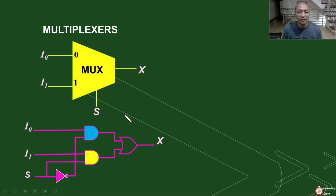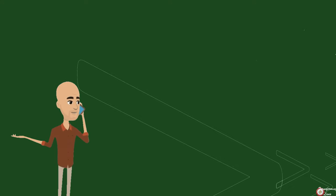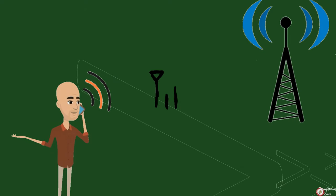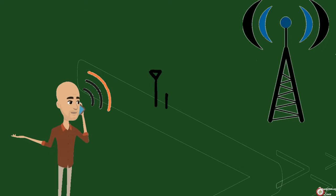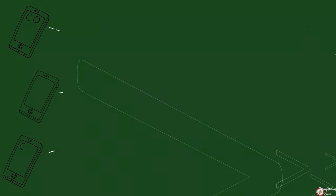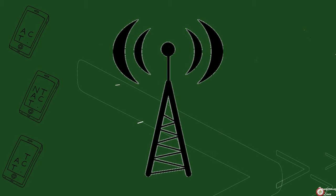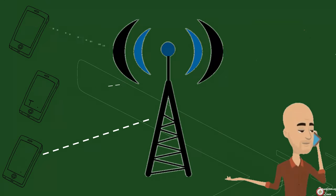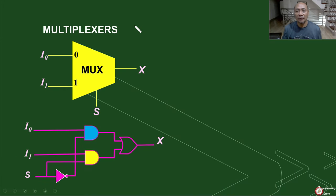In communication, multiplexers are very useful. If we consider our cell phones, for example, multiple people can call at the same time using a single channel. There is no problem as to where our signal would go or who will be communicating, simply because we have a multiplexer. At a given time, one caller will be identified and connected to our line while the rest are muted. That is one of the primary functions of our multiplexer.